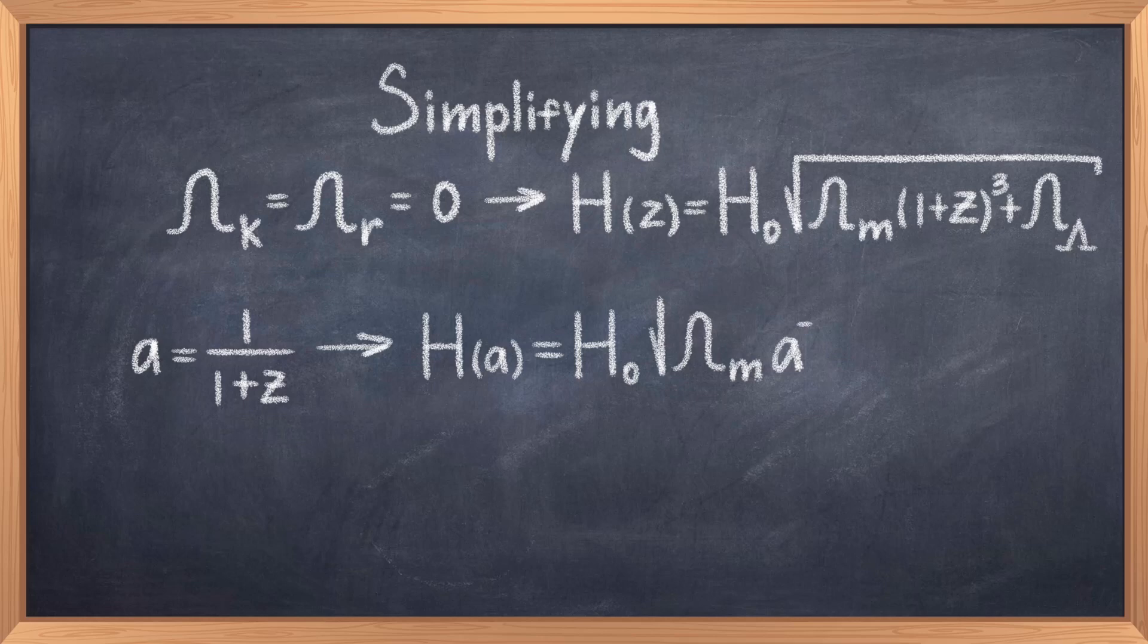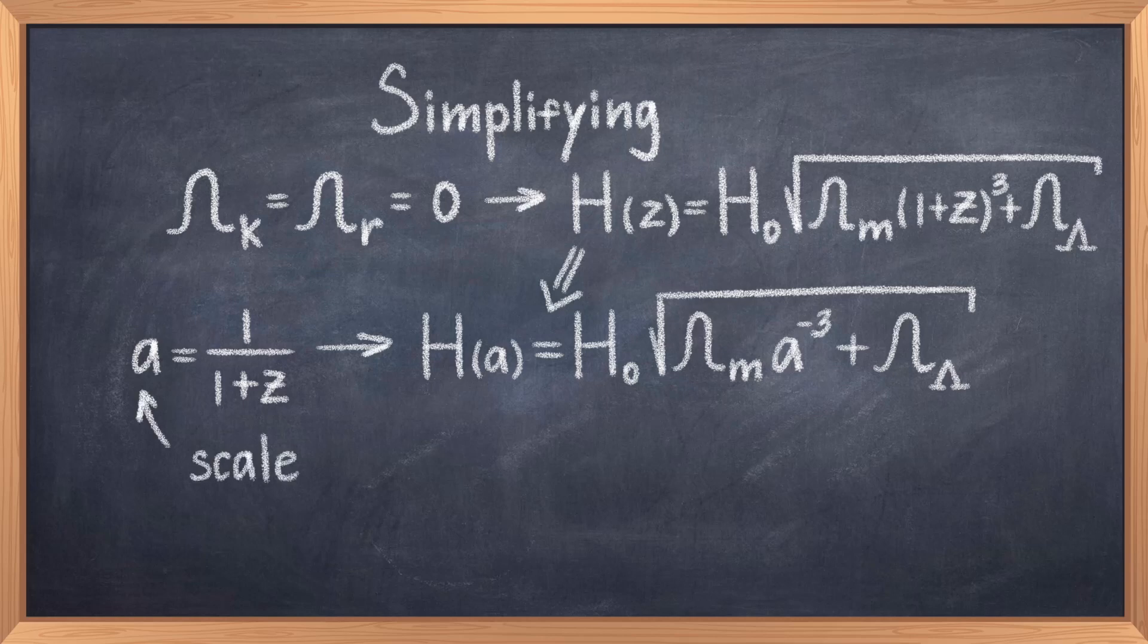Thus we are left with the much simpler equation where the Hubble parameter with respect to redshift is H(z) = H₀√[Ω_m(1+z)³ + Ω_λ]. Since we want the Hubble parameter in terms of the scale factor, we can use the relation presented earlier to obtain H(a) = H₀√[Ω_m a⁻³ + Ω_λ]. This equation we can integrate analytically.